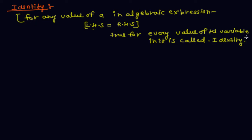For any value of A in an algebraic expression, if LHS — or we can say left hand side — is equal to right hand side, and true for every value of the variable, it is called an identity. Let us have some standard identities which are discussed in this video.